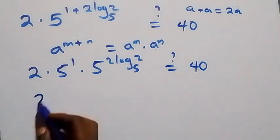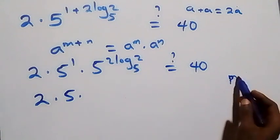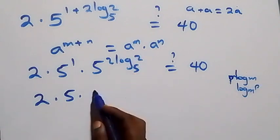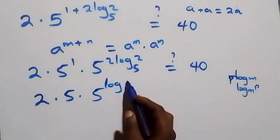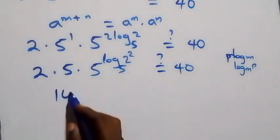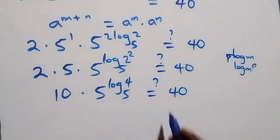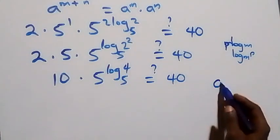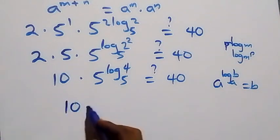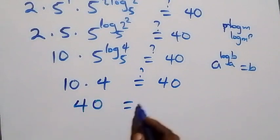This gives us 2 times 5 times 5 raised to the power log₅(2²). Applying the identity a raised to log base a of b equals b, we have 5 raised to log₅(4) equals 4. So we get 2 times 5 times 4, which is 10 times 4, equals 40. The left-hand side equals 40, which matches the right-hand side.